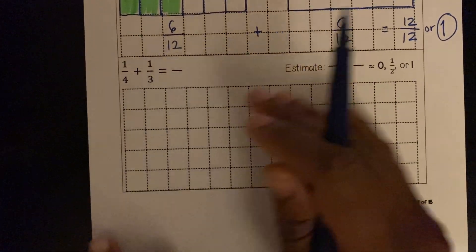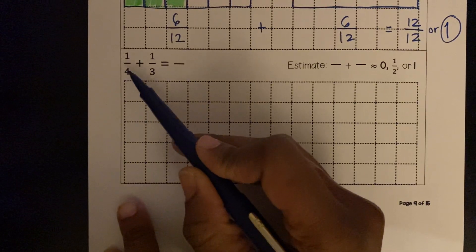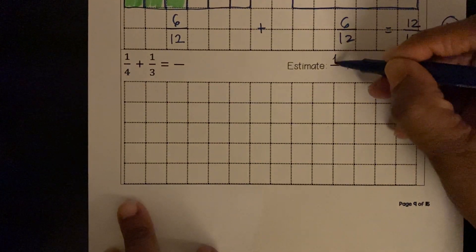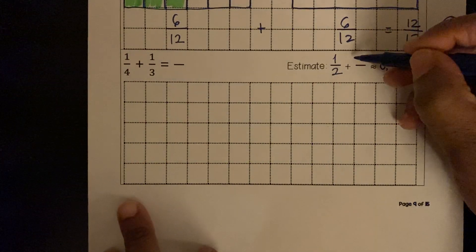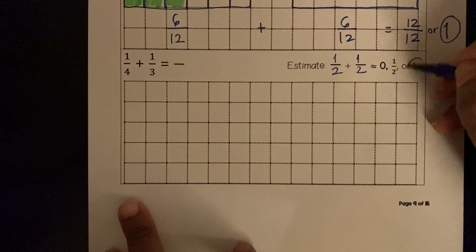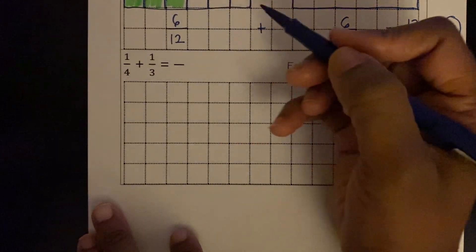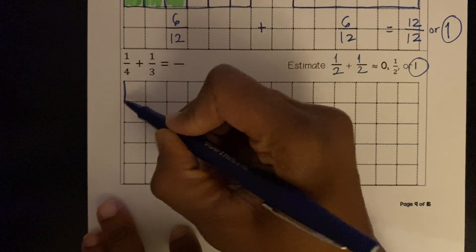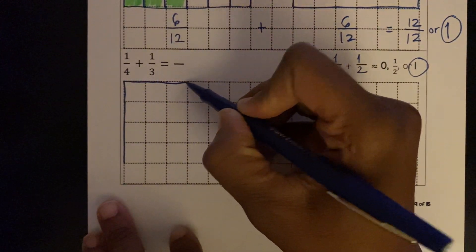1/4 plus 1/3. 1/4 is 1/4 away from the half. 1/3 is 1/6 away from the half. 1/2 plus 1/2 is about 1. So we're going to make a 4 by 3 grid. Let's do one, two, three, four. One, two, three.